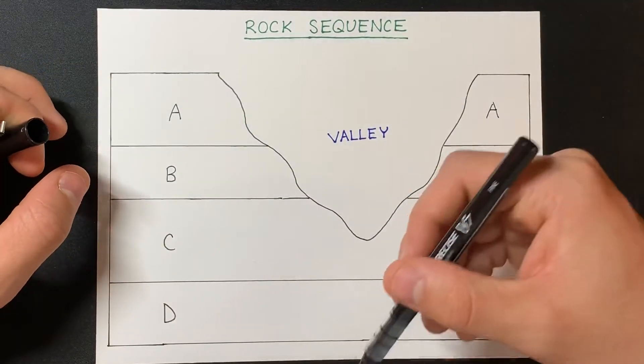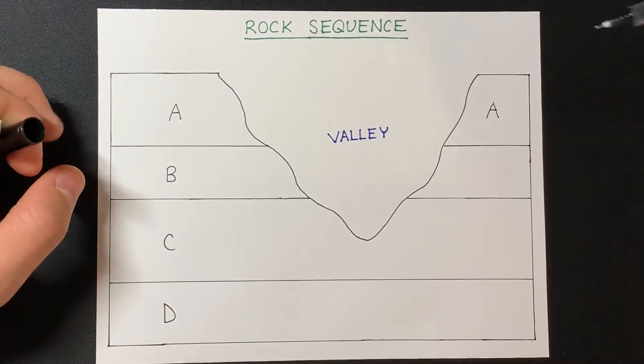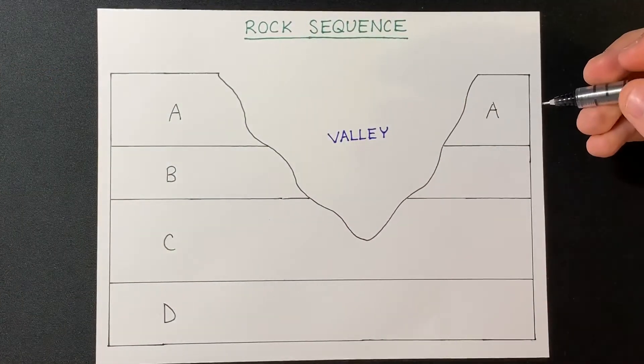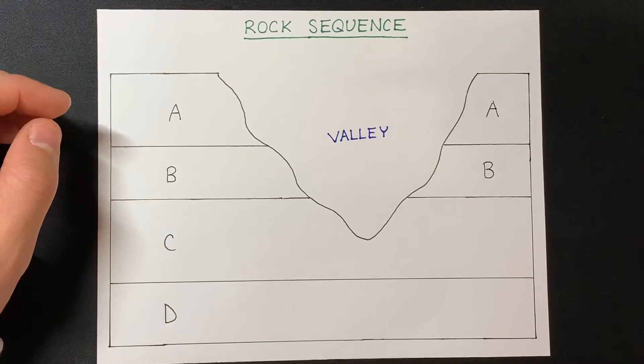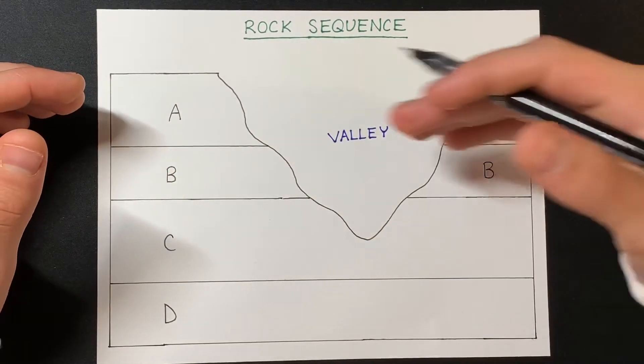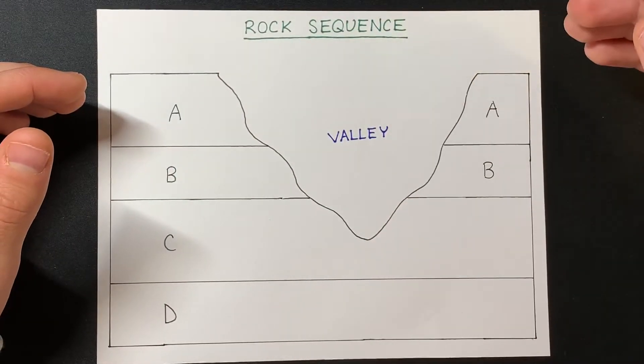And then obviously so on and so forth. Rock layer B, it is safe to assume that these rock layers are the same because they were originally continuous before being eroded away.